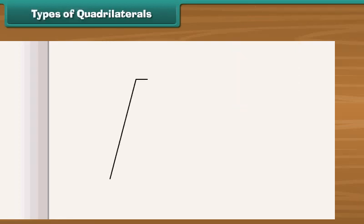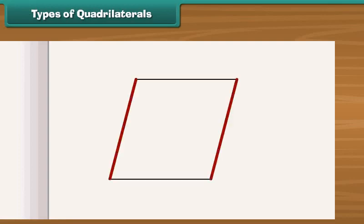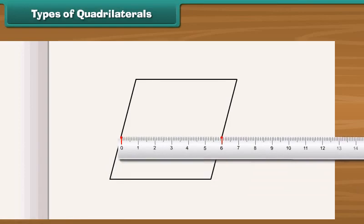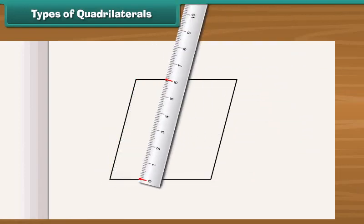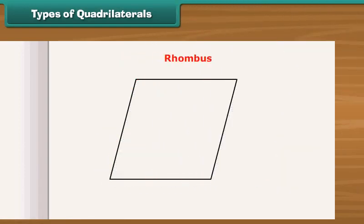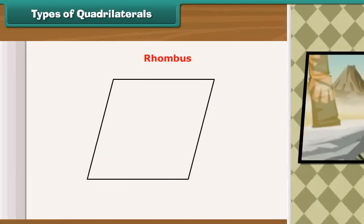A quadrilateral having opposite sides parallel is called a parallelogram. For example, slide is a parallelogram. A parallelogram in which all four sides have the same length is called a rhombus. Look at this painting. This is a rhombus.